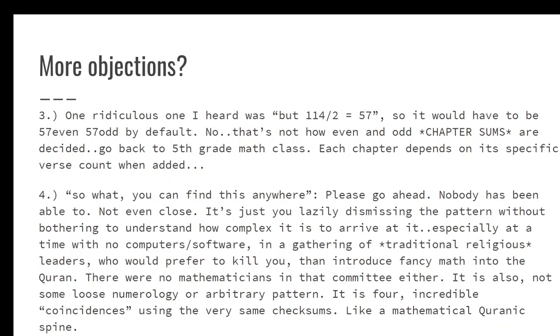And I've noticed in the responses I've gotten from sharing this, some people are just lazily dismissing the pattern without even understanding how complex it is to derive it or to arrive at it, how incredibly impossible it is for such a structure to just be found like that or created like that, especially with no computers and software in a gathering of traditional religious leaders who would prefer to kill you than introduce some fancy math into the Quran. And a reminder it's not just some loose numbers, it's using the same chapter sums and we have four of these beautiful patterns in there that tightly wrap up the Quran structure like a Quran spline in terms of its mathematical structure.